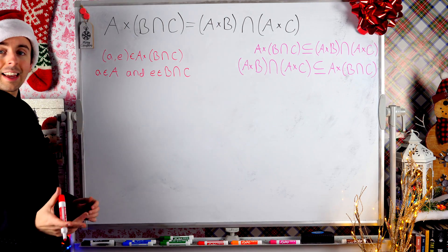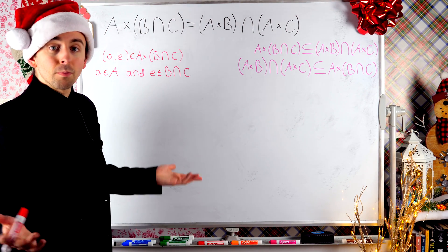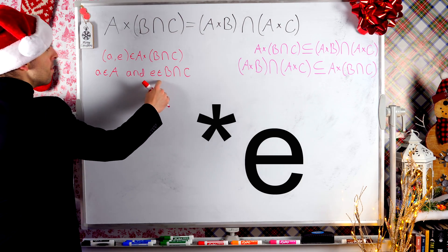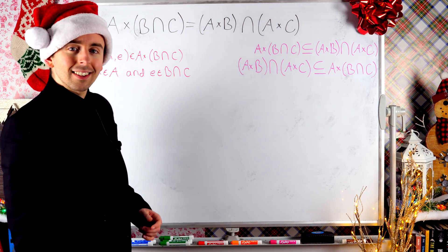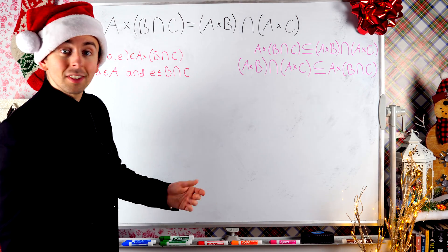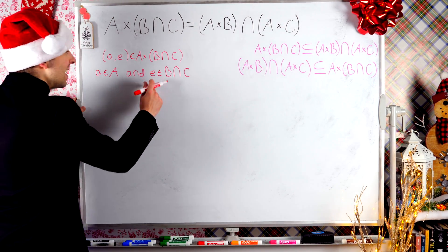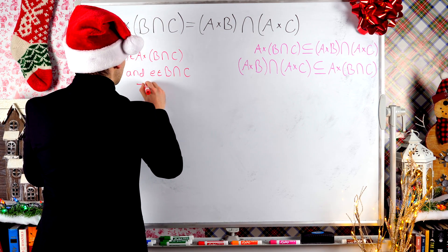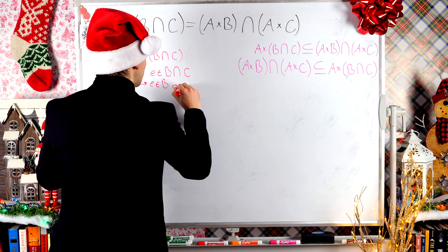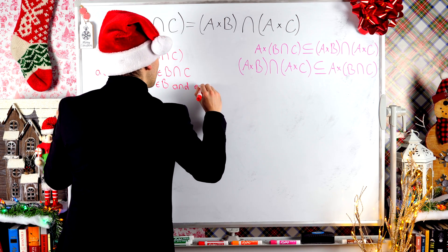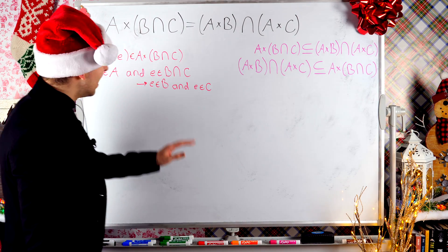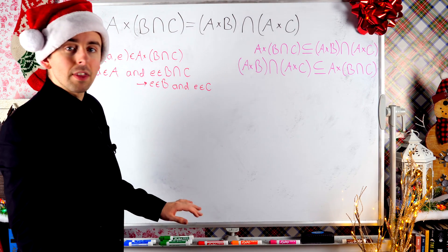Little a being in the set big A just means exactly what it says. But what about e being an element of B intersect C? By definition of set intersection, that means e is an element of B and e is an element of C. That's the only way that e could be in the intersection of the two sets — it's got to belong to both of them.